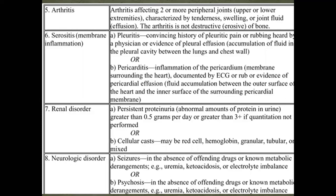Arthritis in lupus affects two or more peripheral joints (upper or lower), characterized by tenderness, swelling, and joint effusion. Crucially, it is non-destructive on X-ray. If erosions are found on X-ray in a patient with lupus criteria, this suggests overlap with rheumatoid arthritis — sometimes called 'Rhupus.' Serositis refers to the pleural or pericardial membranes, which can be dry or with effusion.